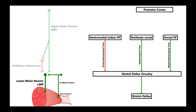Now there is other descending inhibitory input. Here is the stretch reflex circuitry, and there are several nuclei controlling it. The first is the ventromedial bulbar reticular formation — when activated, it inhibits the stretch reflex via the dorsal reticulospinal tract. Then we have the dorsal reticular formation — when activated, it actually activates the stretch reflex circuitry via the medial reticulospinal tract. And then we have the vestibular nuclei, which when activated, also activate the stretch reflex circuitry via the vestibulospinal tract.